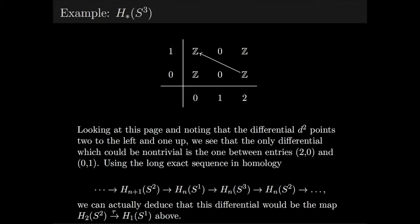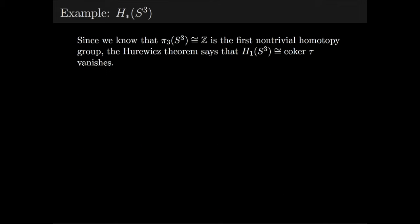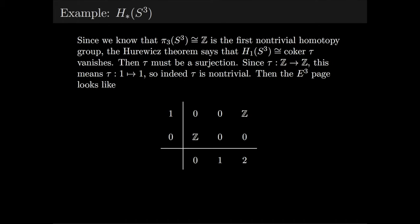However, there's an easier way using the fact that we have a long exact sequence in homology induced by the fibration. Looking at this long exact sequence, we can actually deduce that this differential corresponds to the map H₂ of S² to H₁ of S¹ above. This map is actually called the transgression, and analyzing it to understand how differentials behave in your spectral sequence is actually a very common technique.